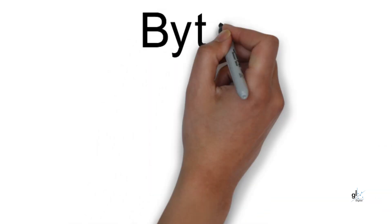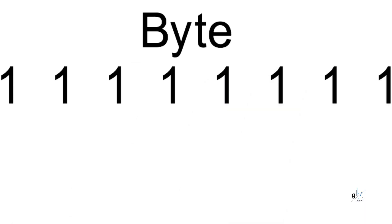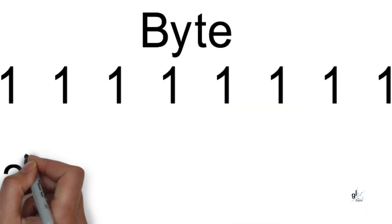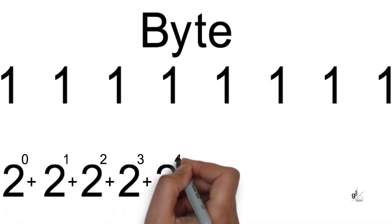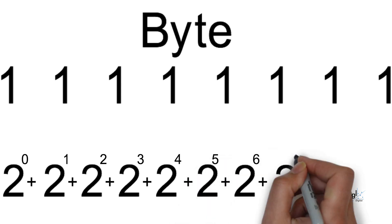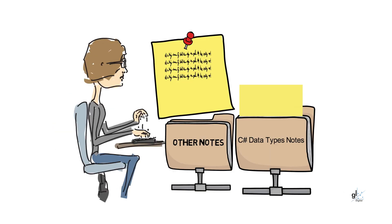The number of bits related to a particular data type exponentially affects the magnitude and range of values that can be stored in an integer. For example, the byte data type is an integer data type that can support eight bits of data. It is an unsigned data type, which means it can only support positive values. A signed data type, like the Int32 data type, can support both positive and negative values.